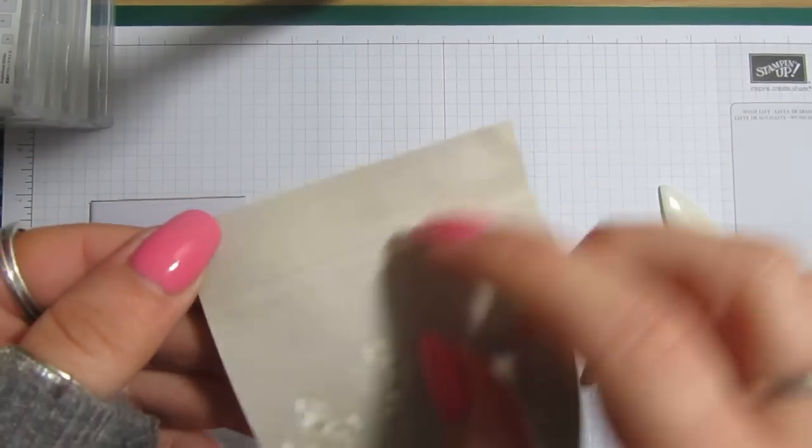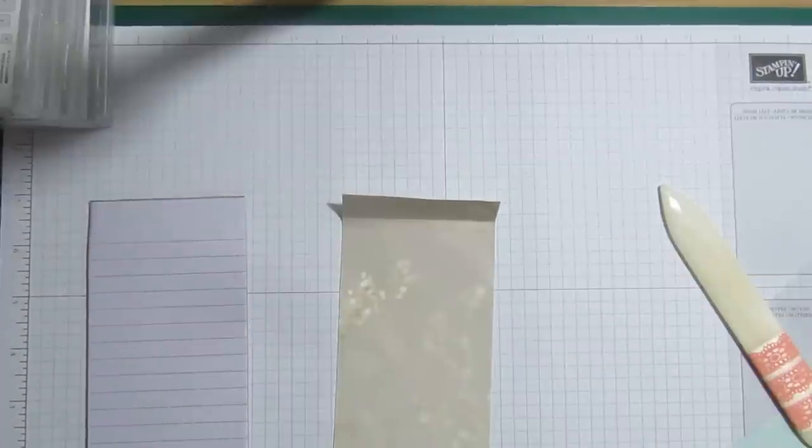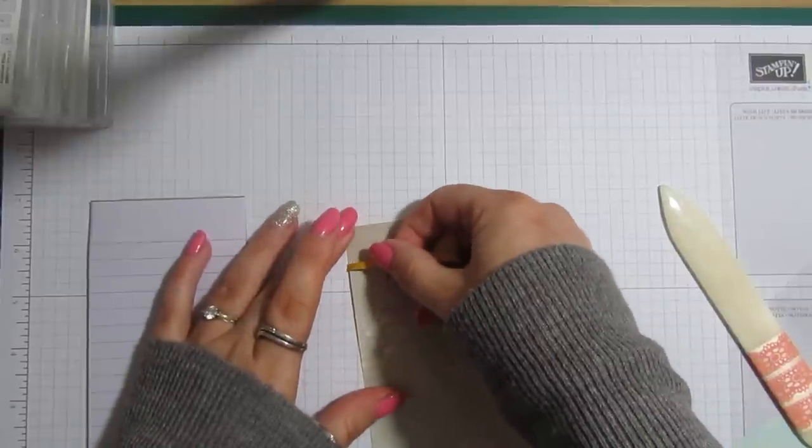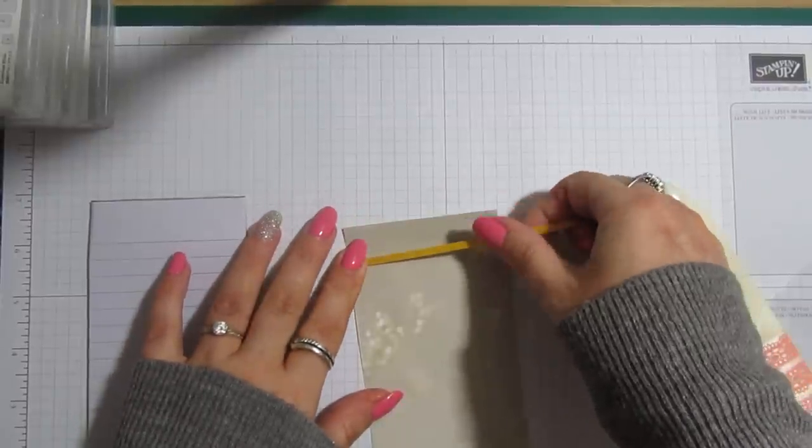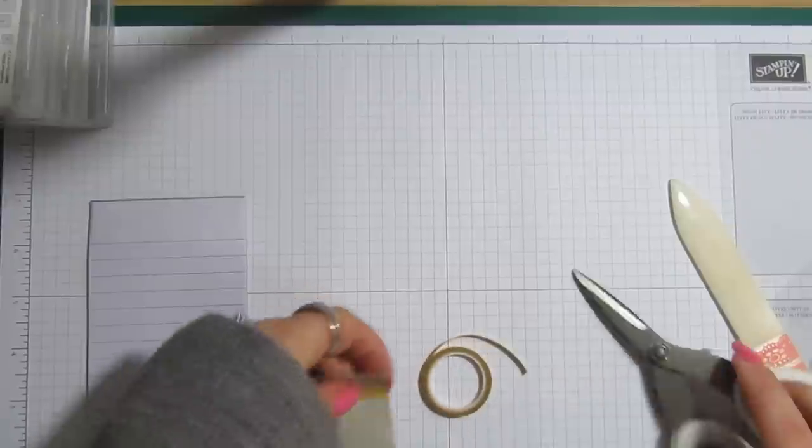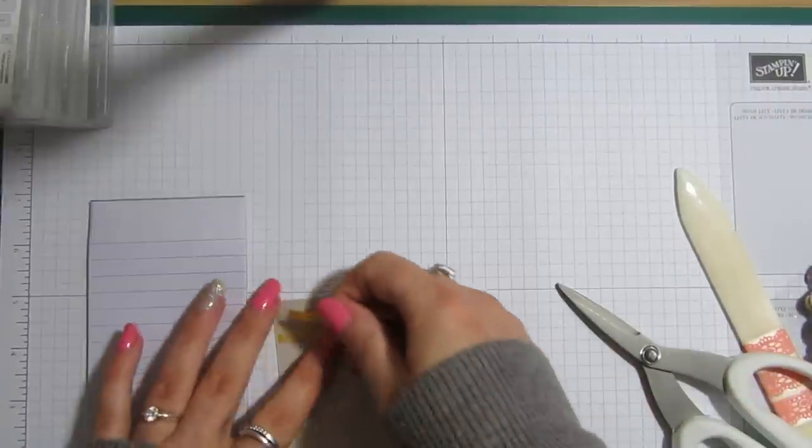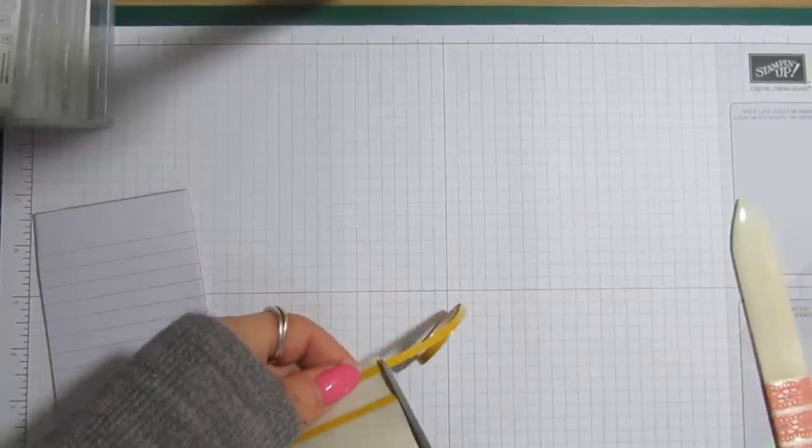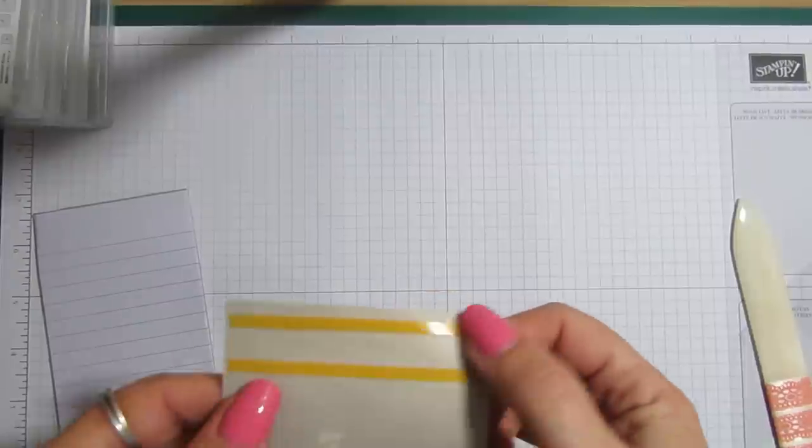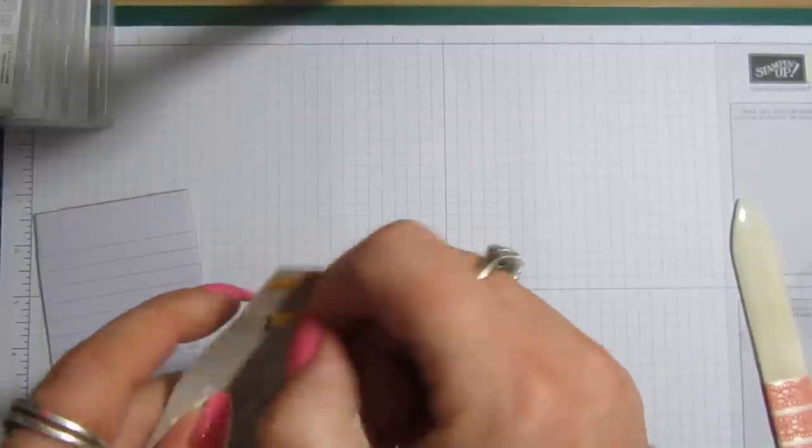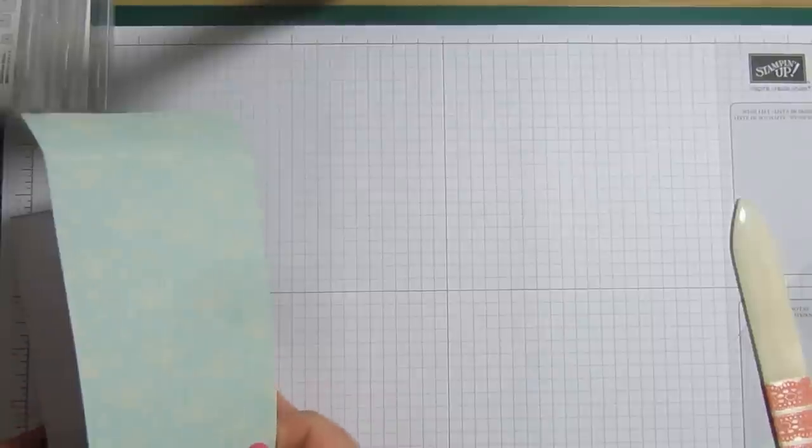Just like that. And then you want some really thin tape down that middle score line. So, I've got some of this thin tape here. And just pop it down the middle of the score lines that you've just made. And then another piece, just so it sticks to the back of the notepad.